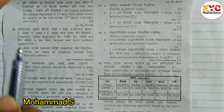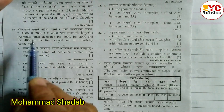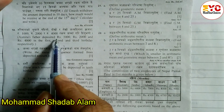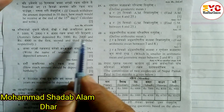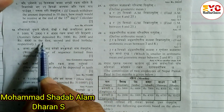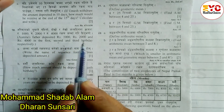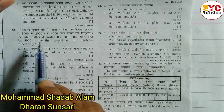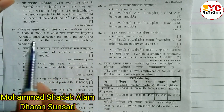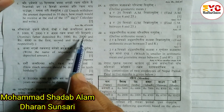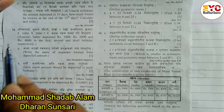Question number 18. You can see here, Asmita's father deposits rupees 1,000, 2,000 and 4,000 on the 1st, 2nd and 3rd birthday respectively. So the 1st birthday is 1,000, 2nd birthday is 2,000 and 3rd birthday is 4,000.